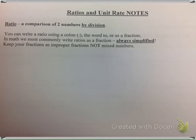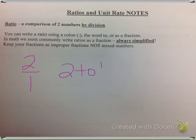A ratio is a comparison of two numbers by division. You could write a ratio using a colon, the word 'to', or as a fraction. For example, I could write a ratio 2 over 1, 2 to 1, or 2 colon 1. Those are a few different ways. The most common in math is as a fraction.